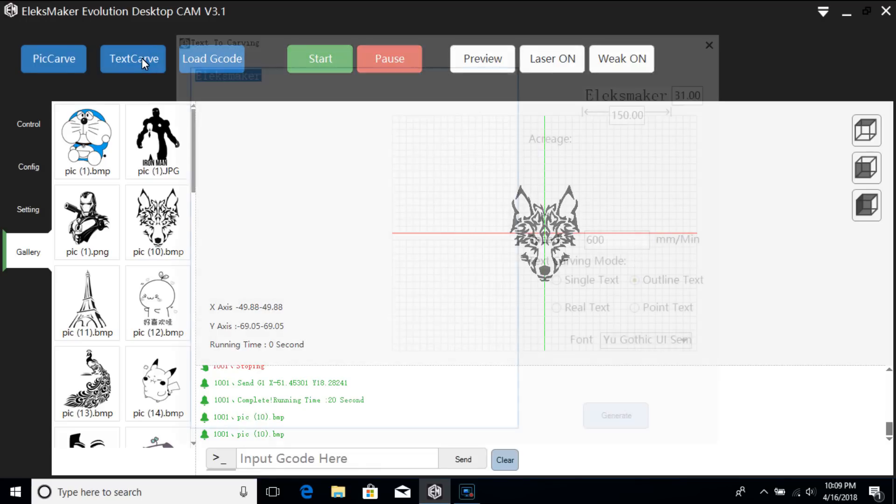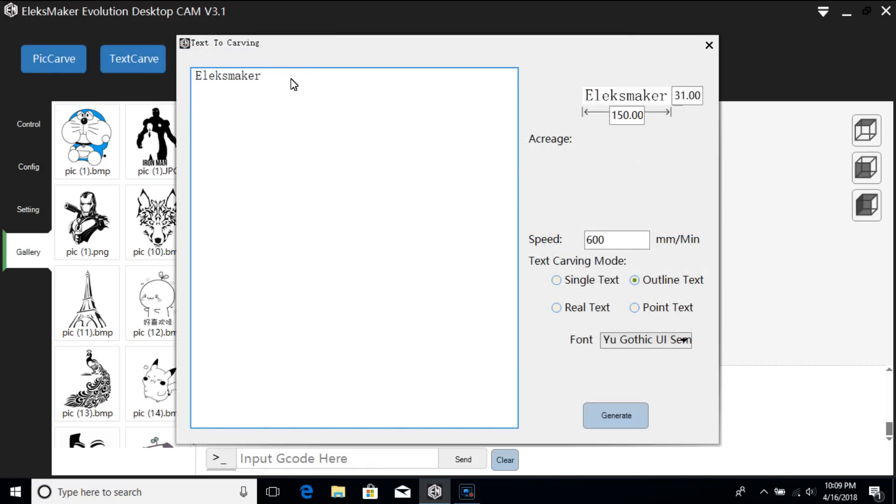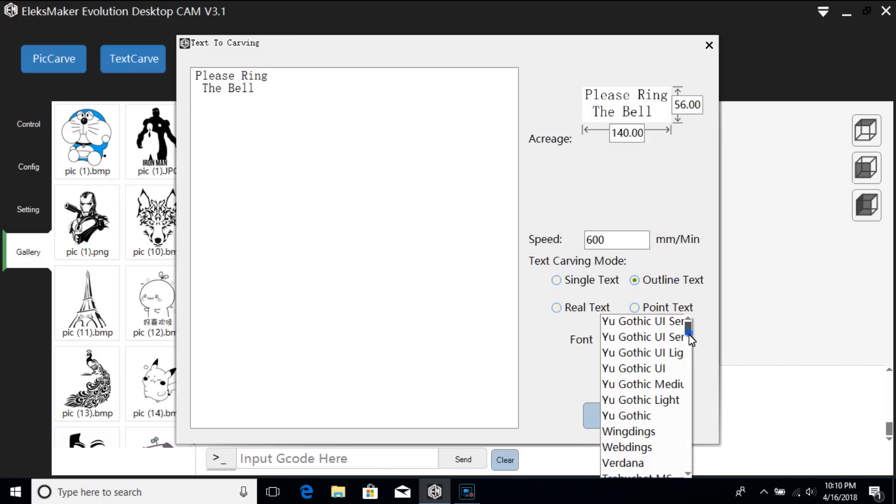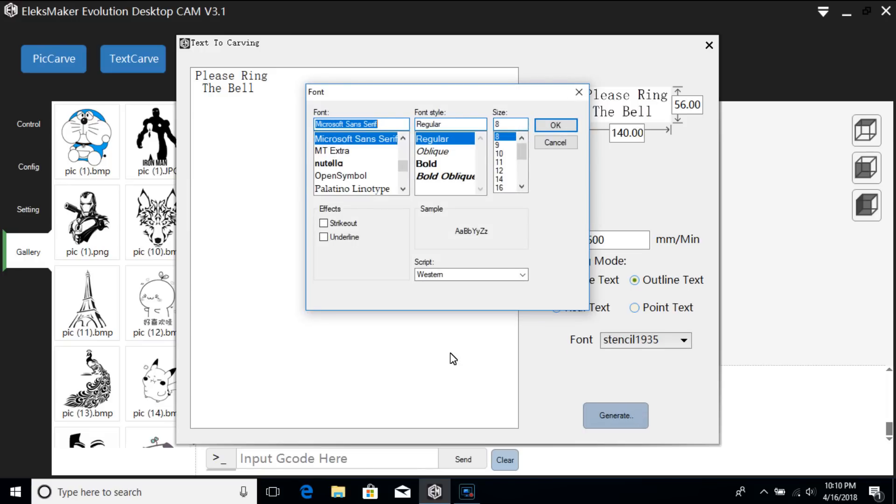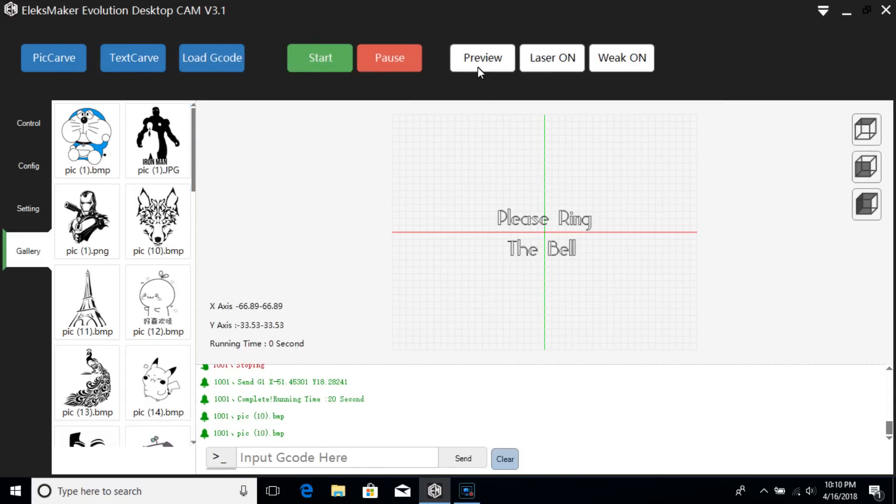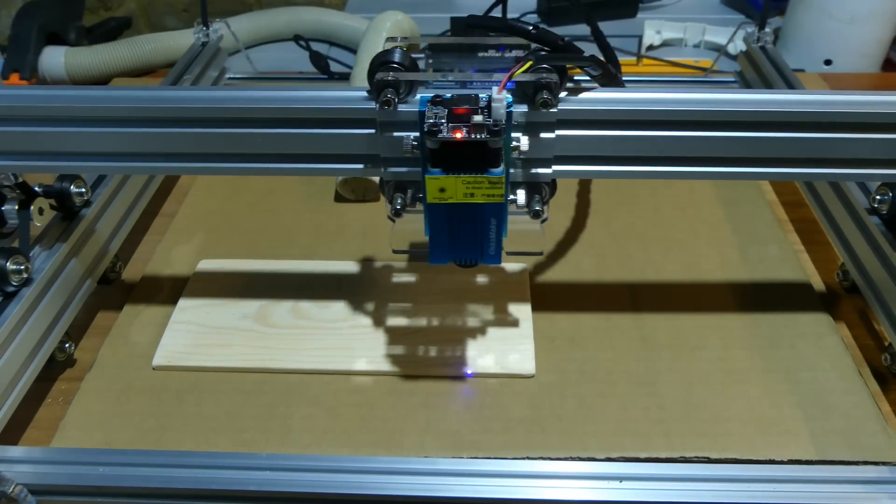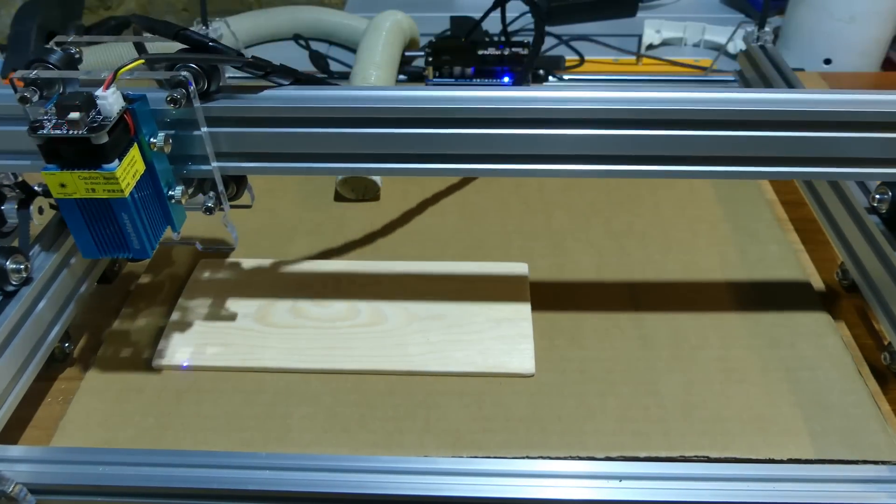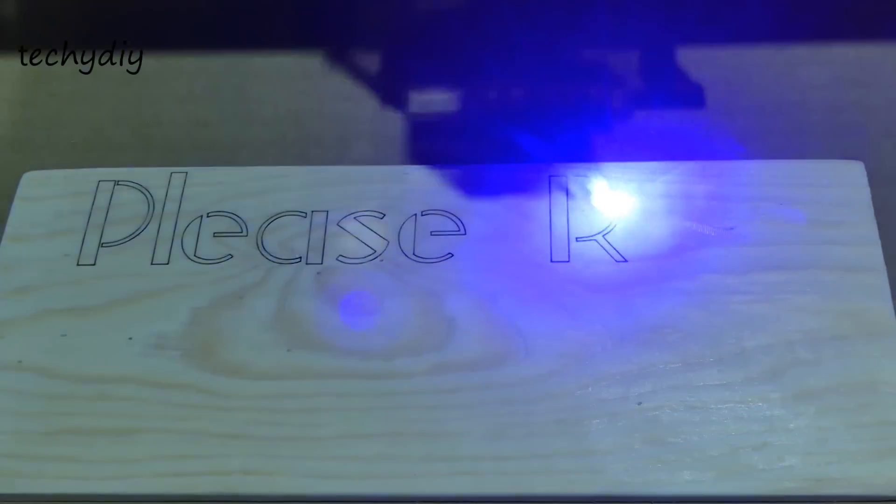We can also engrave text. Select the speed and the height, the carving speed, the carving mode, and the font. Then we can preview where it's going to engrave and if we're happy with that, start the engraving.